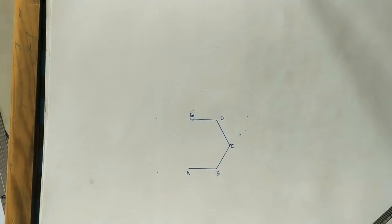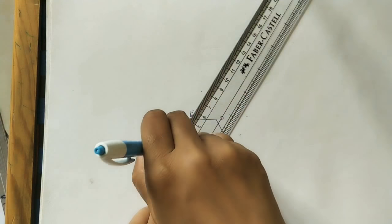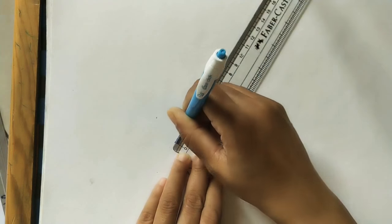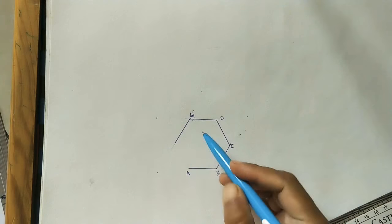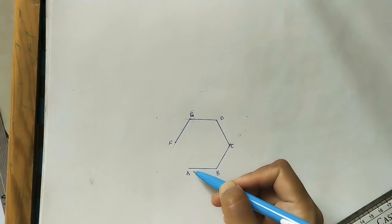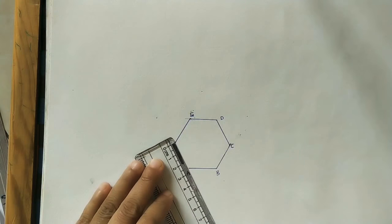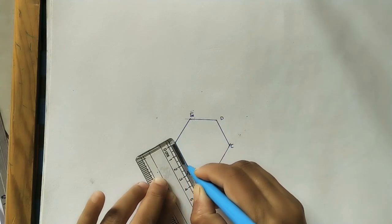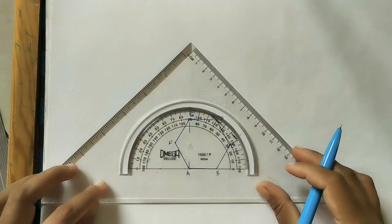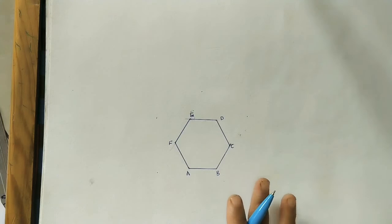From point E, take 60 degrees and mark 2.5 centimeters to locate point F. Now verify: the distance EF should measure 2.5 centimeters and the angle at A should be 60 degrees. Check the angle — it is 60 degrees — confirming that the hexagon constructed is correct.